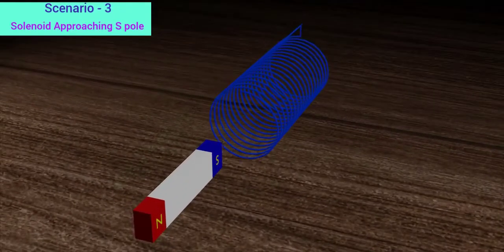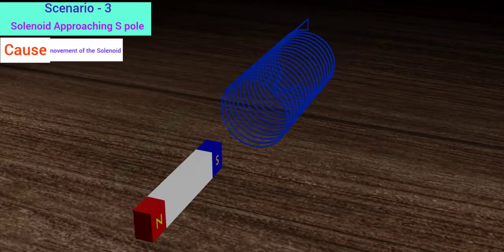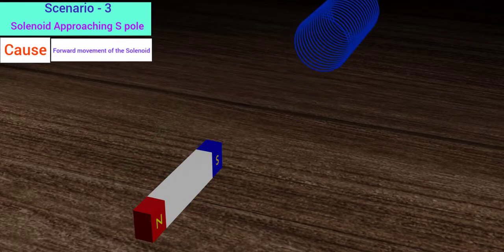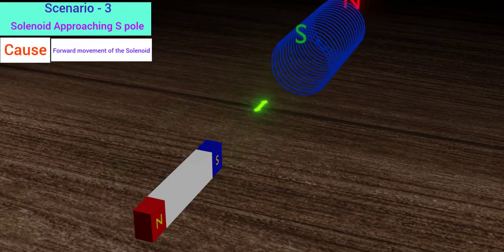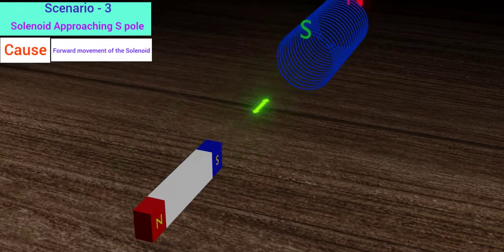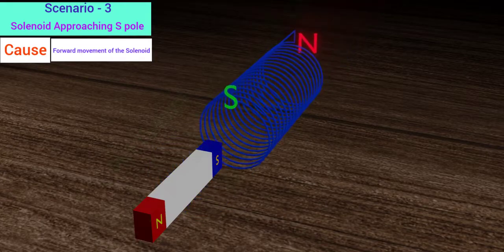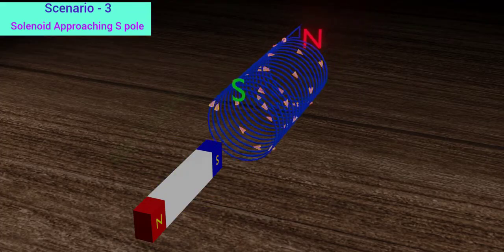Take the third scenario. Here the cause of generation of the induced current is the advancement of the solenoid towards the south pole of the magnet. To counter its advancement, a repulsive force needs to be generated. To get a repulsion, the solenoid should produce a south pole near the magnet. Hence the direction of the induced current in the solenoid is clockwise.